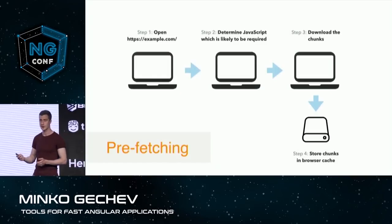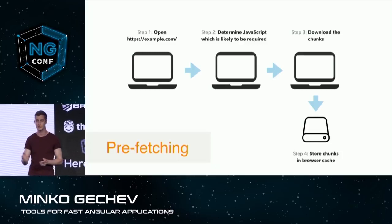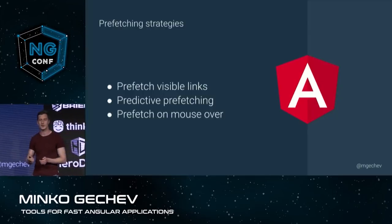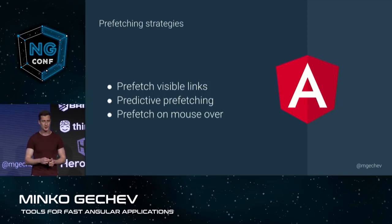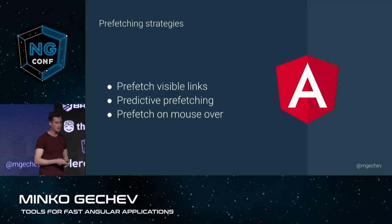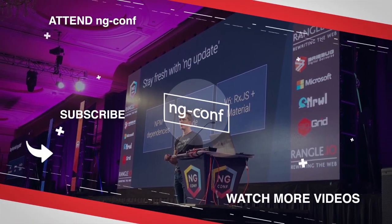That's why we have techniques such as prefetching. With prefetching, in the background, we can download the JavaScript associated with pages that we suppose the user may need next, and then provide them from the browser's cache once the user actually navigates to those pages. There are a couple of more efficient prefetching heuristics we can use. For example, we can prefetch only the visible links on the page, because if the user is going to navigate somewhere it's very likely they'll click on a visible link. We can use predictive prefetching, which I'm particularly excited about and will discuss in a bit. Or we can prefetch the JavaScript associated with a specific router link on mouse over.